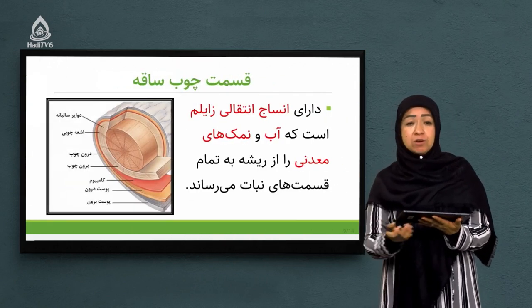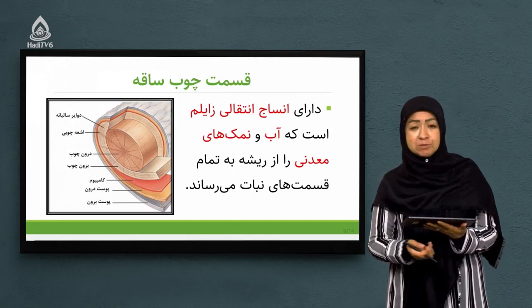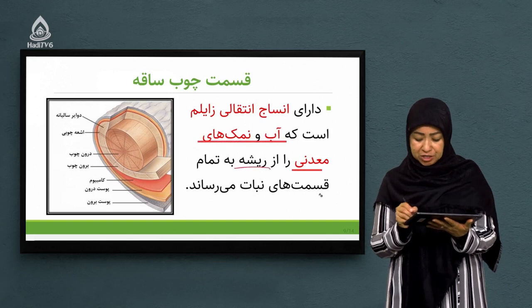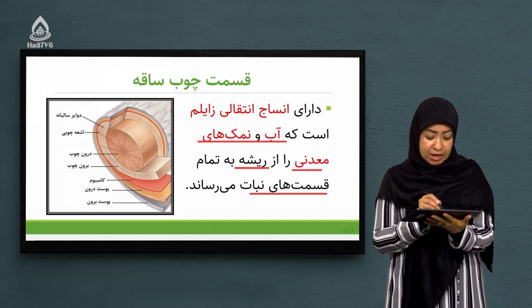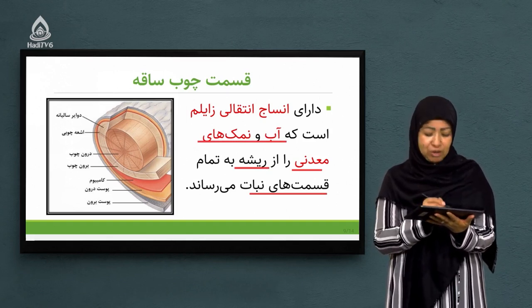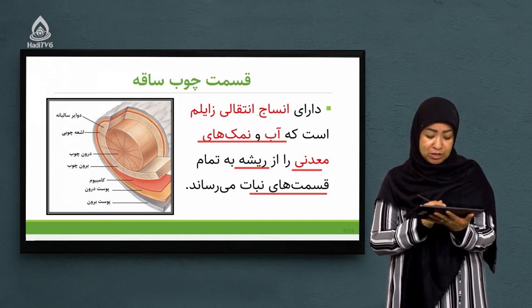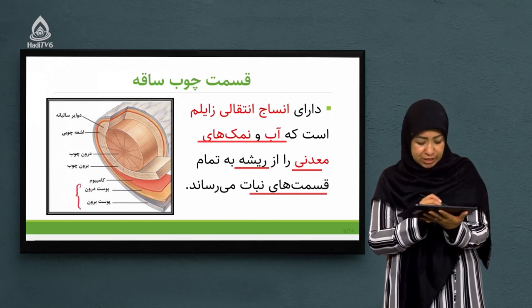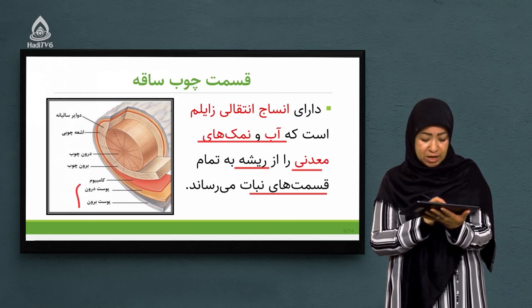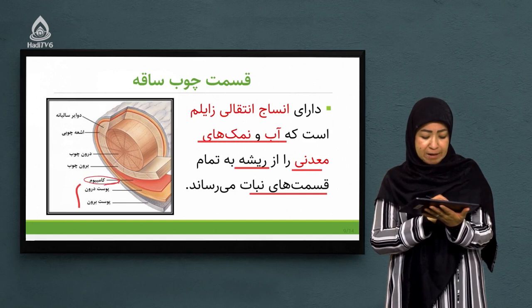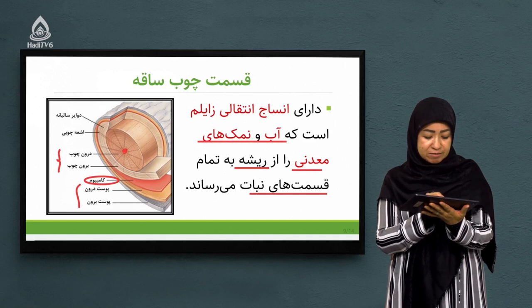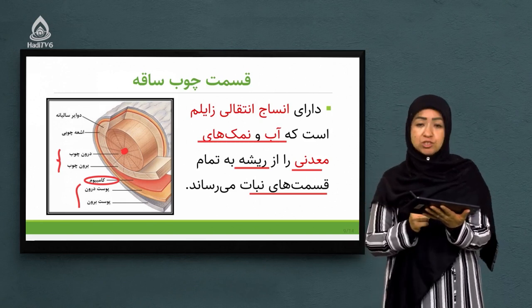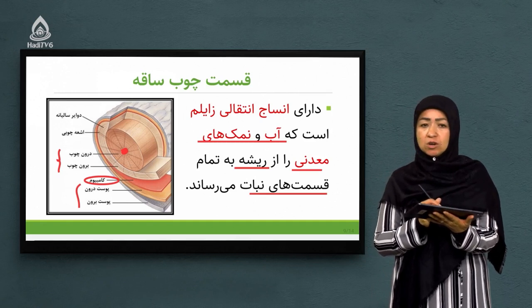در این اسلاید انساج انتقالی زایلم و فلویم را یک بار دیگر یادآوری می‌کنیم: زایلم‌ها بودند که آب و نمک‌های معدنی را از ریشه می‌گیرند و به قسمت‌های مختلف نبات می‌رسانند. این برش لایه‌لایه، واضح‌تر نشان می‌دهد که از سمت خارج به داخل، بخش پوست خارجی و داخلی، بعد کامبیوم، بعد قسمت چوب، و در وسط مغز ساقه قرار دارد.